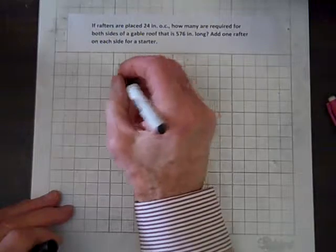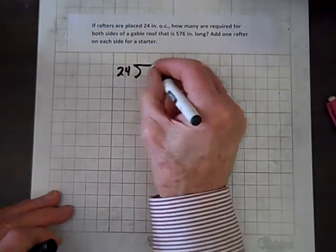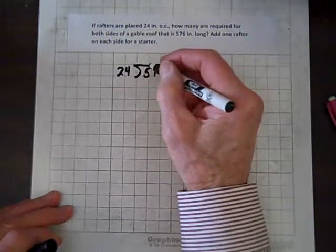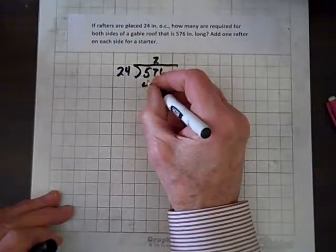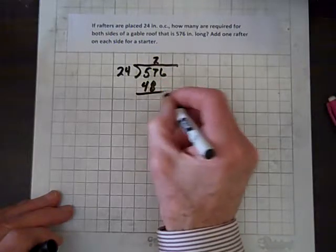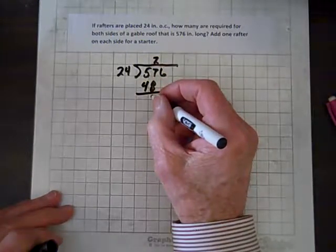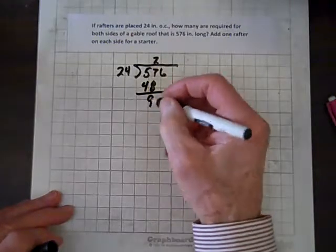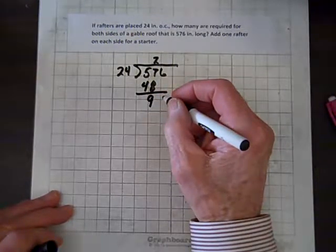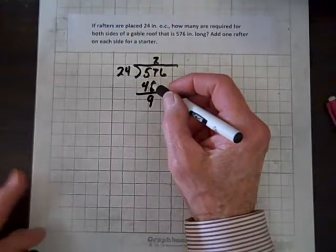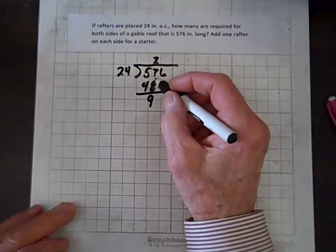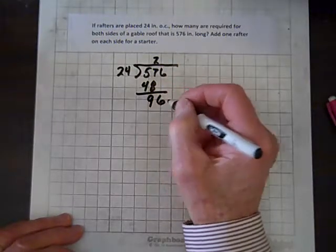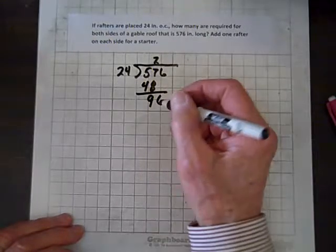So, anyhow, we know we have to divide 24 into 576. So, what times... 24 times 2 will get us as close as we're going to get to 57. That's 2 times 24 is 48. Now, we'll subtract. I'll have to borrow one from the 5. And so, 8 and 9 is 17. And then we'll bring down the 6.